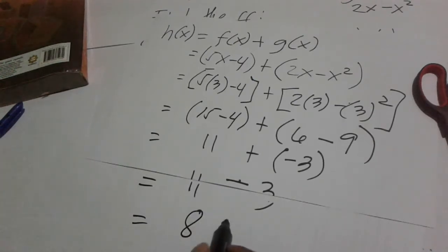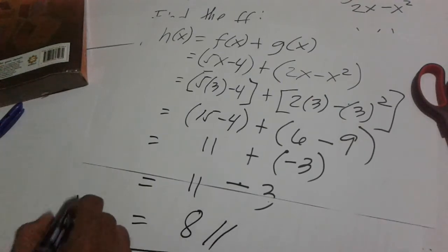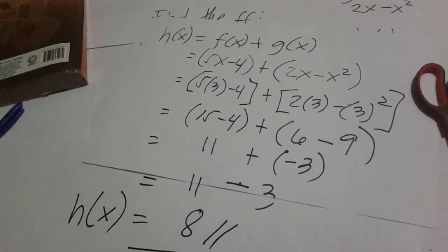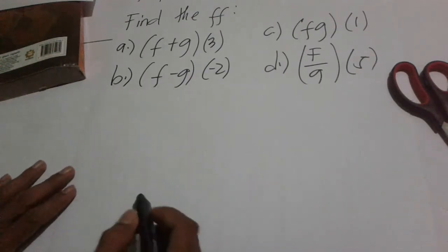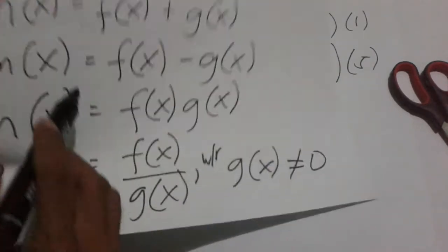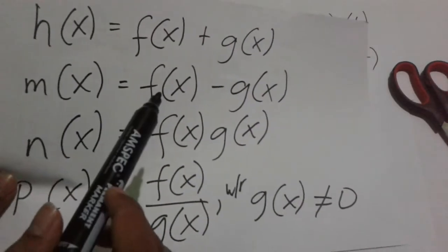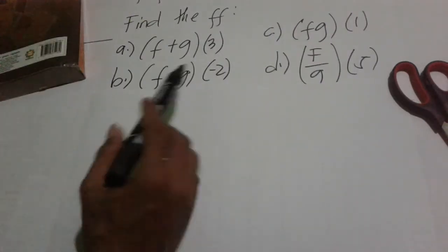So our answer is 8. That means h of x at x = 3 is 8. Next, for letter (b), we will use m(x) = f(x) - g(x) since it involves subtraction.